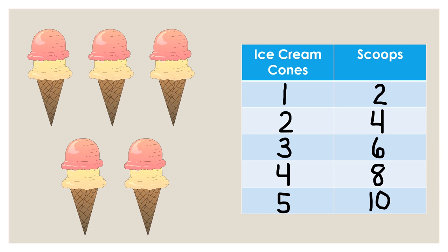Did you notice the numbers in the ice cream cone column are in counting order, one, two, three, four, five?